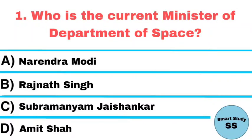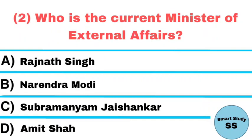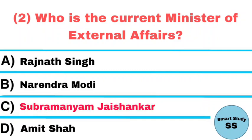Question number 1: Who is the current minister of Department of Space? Answer: Narendra Modi. Question number 2: Who is the current minister of External Affairs? Answer: Subrahmanyam Jaishankar.